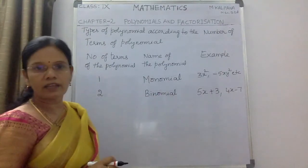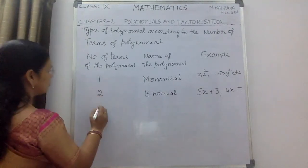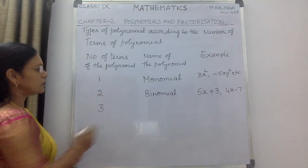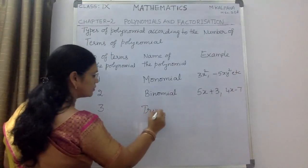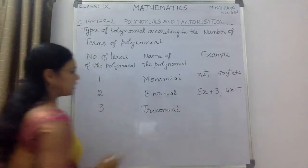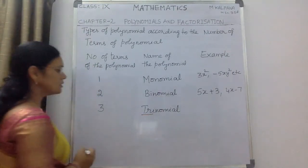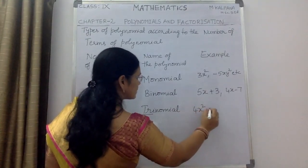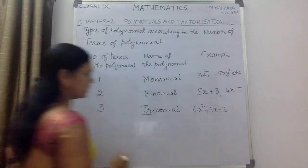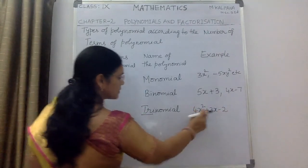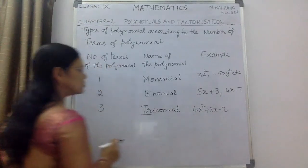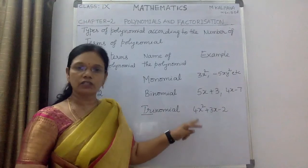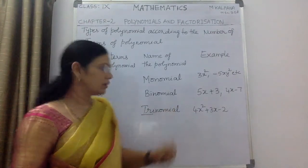If the number of terms of the polynomial is 3, that can be known as a trinomial. Tri means 3. For example, 4x² + 3x - 2 is a trinomial because it has three terms: 4x², 3x, and 2. You can also give some more examples — children, write some examples for each type of polynomial in your notebook.